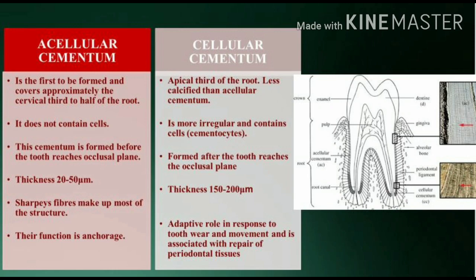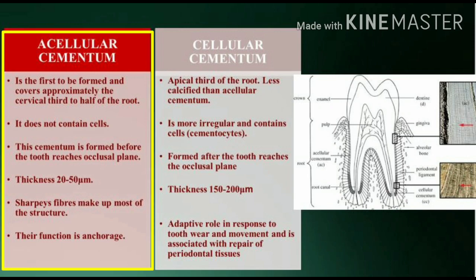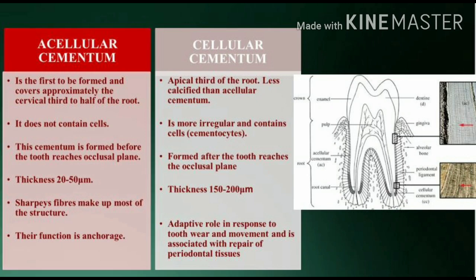Acellular cementum is the first to be formed and covers approximately the cervical third to half of the root. It does not contain cells. This cementum is formed before the tooth reaches the occlusal plane. Thickness: 20–50 µm. Sharpey's fibers make up most of the structure, and their function is anchorage.